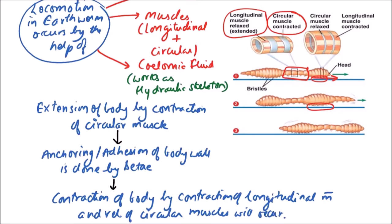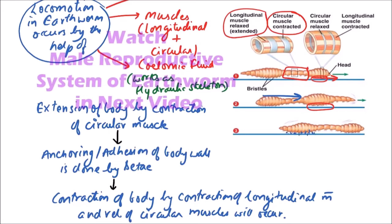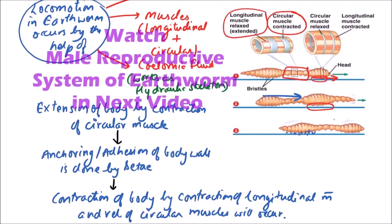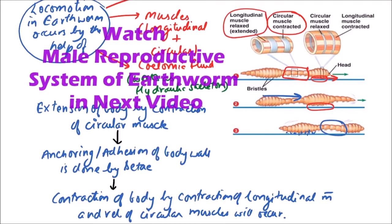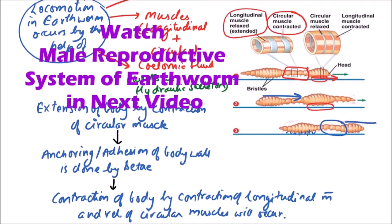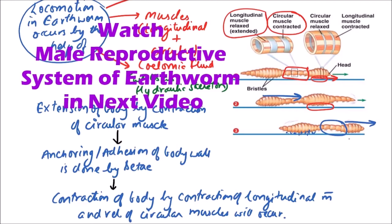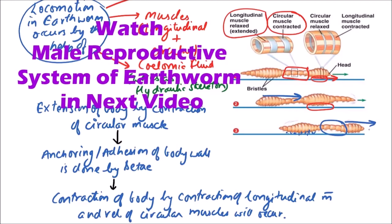So when contraction of longitudinal muscles will be done, the posterior part of body will move in forward direction. Then again bristles will make a grip, and then again circular muscles will be contracted and the region anterior to the contraction of circular muscles will move forward.